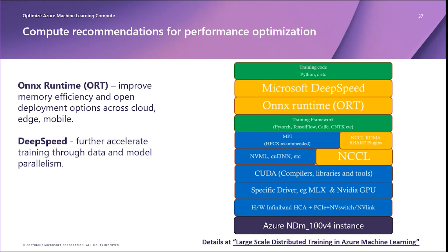The ONNX and DeepSpeed libraries are available in the Azure PyTorch environment as part of the software stack pictured on the slide, and will speed up your training time to help you get more out of your GPU cluster reservation.